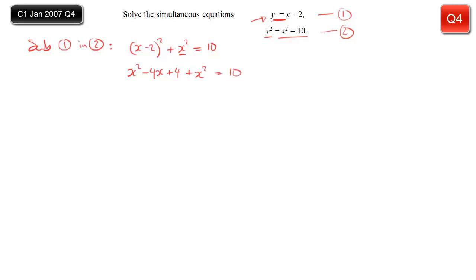So we'll go ahead and solve this to find x, gather the x squareds together. We've got minus 4x still. We've got the plus 4, but there's a 10 over there. So we'll subtract that, so that everything's on the same side. We have minus 6 equals 0.